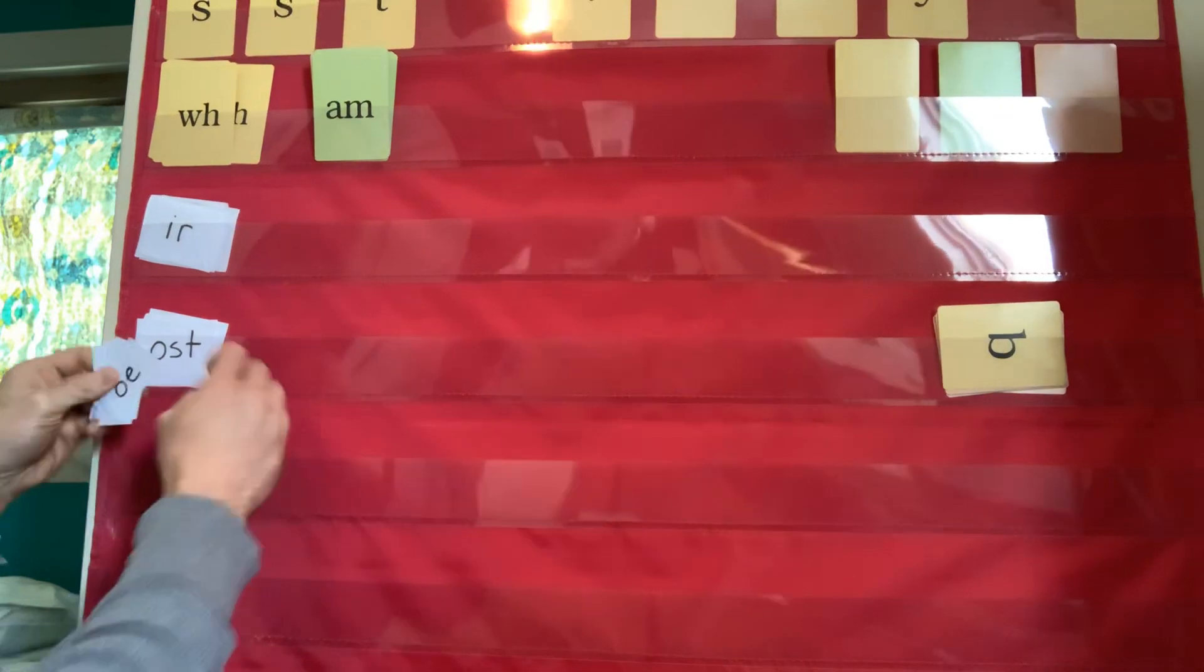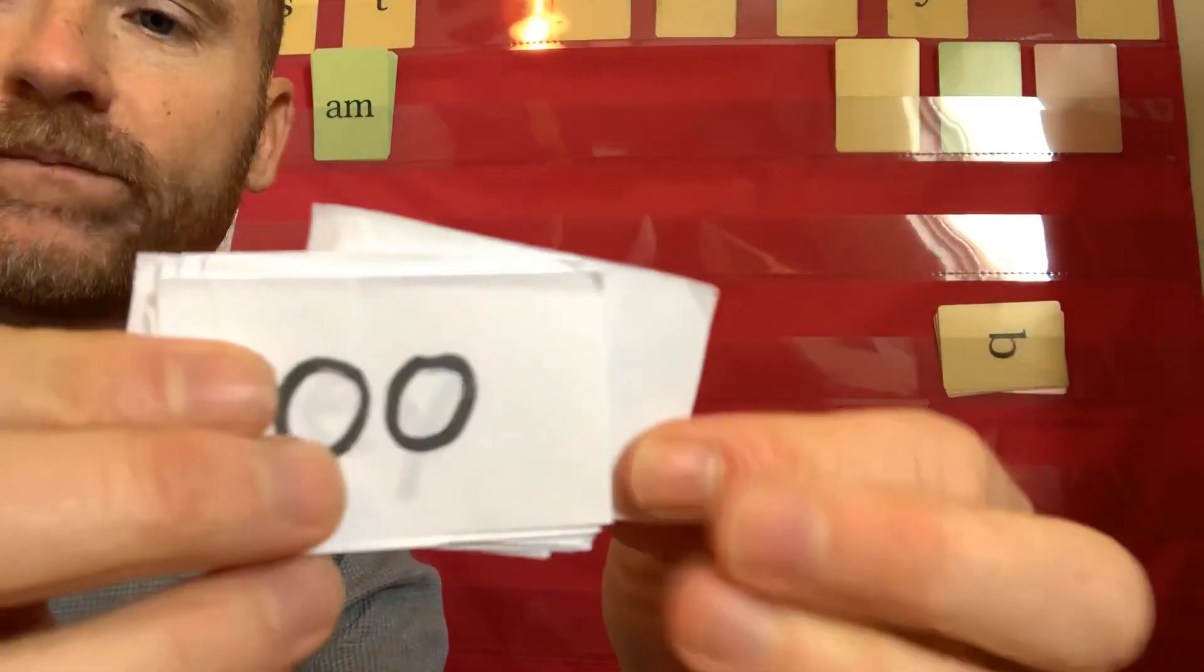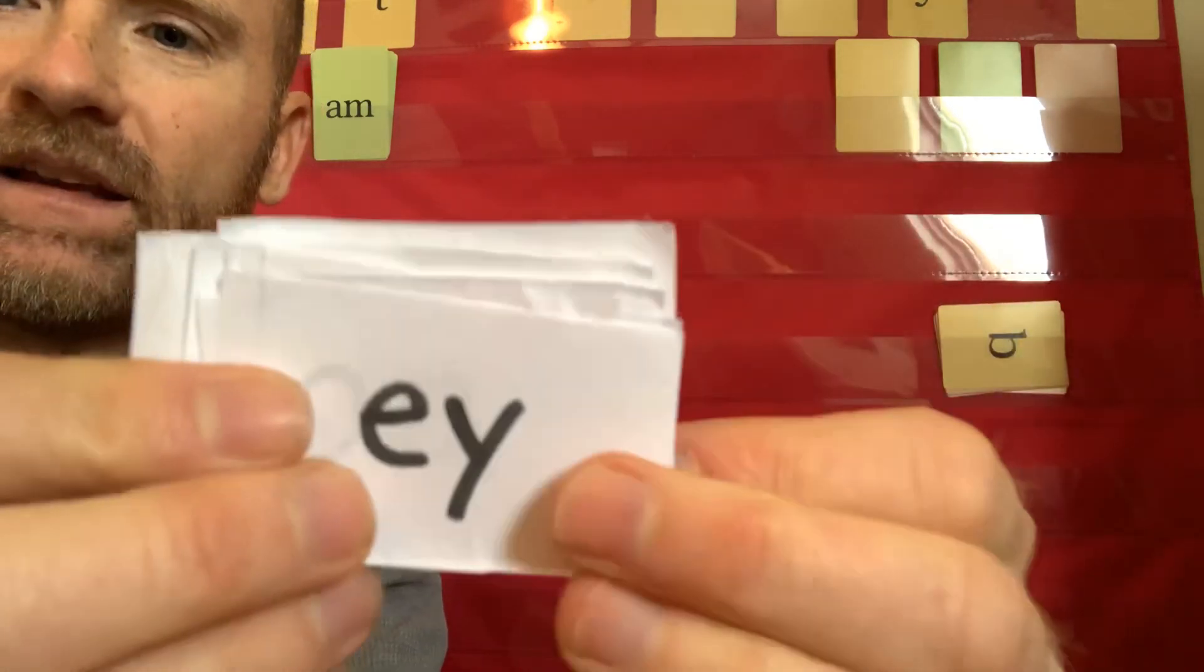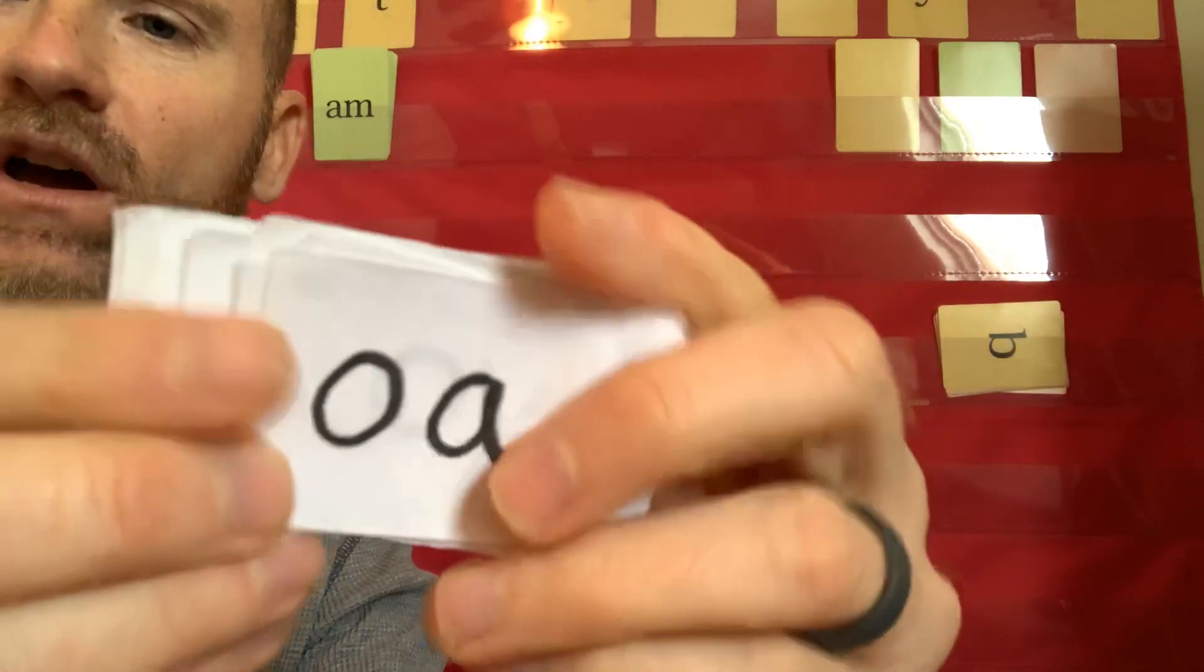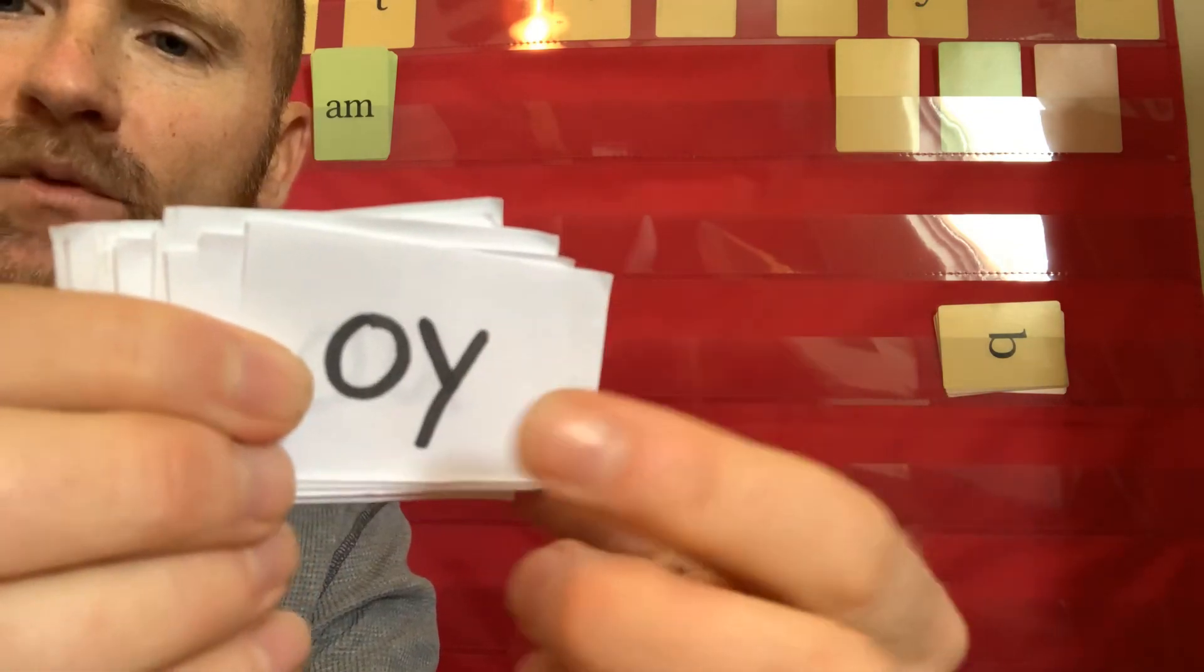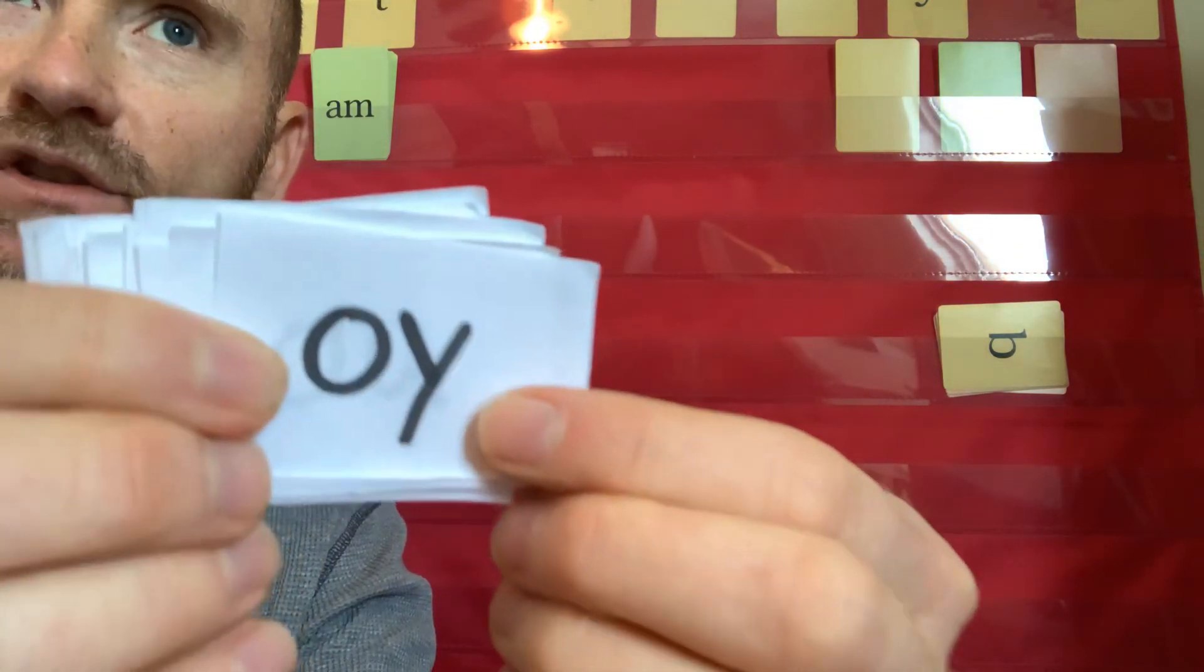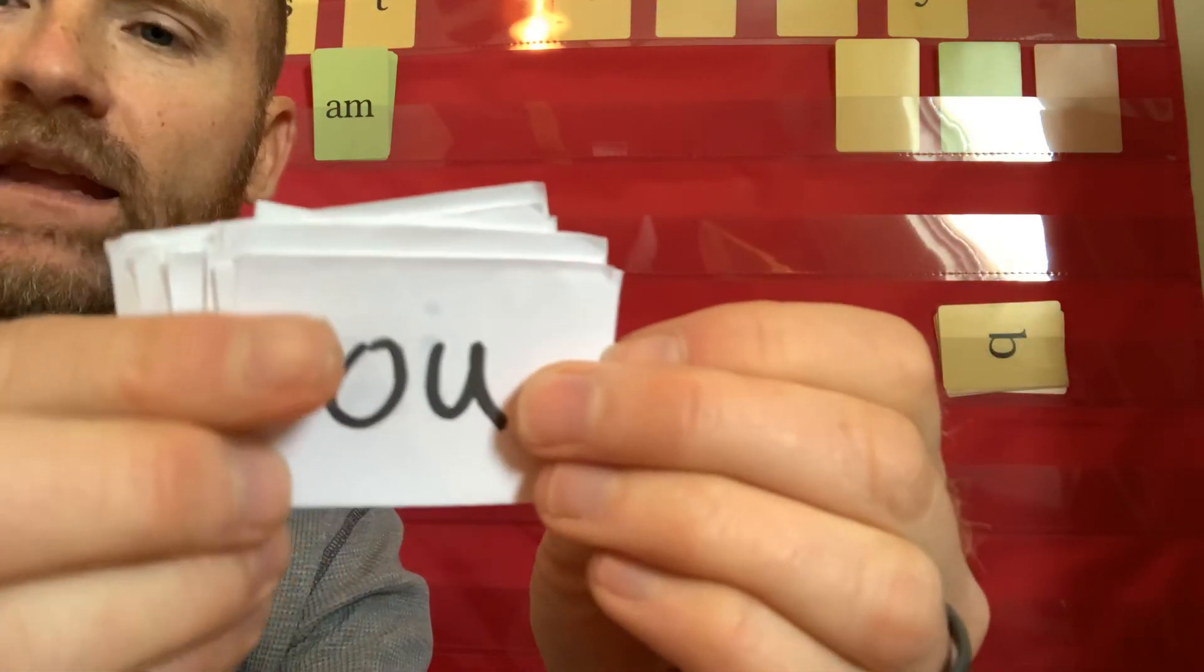Vowel teams. Remember, usually with vowel teams, it's going to say the name of the first vowel. Not always. But that's just a helpful hint. Ready? What sounds O-E? O. O-A? O-A. O-U? What's the other sound? U. E-Y? E. O-A. What sound? O. O-Y? Oy. Remember, the ones that end with Y are usually going to come at the end of the syllable or the end of the word.